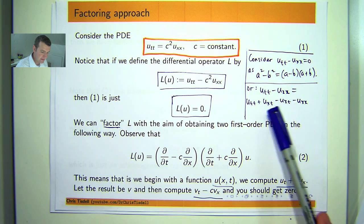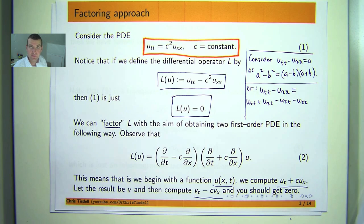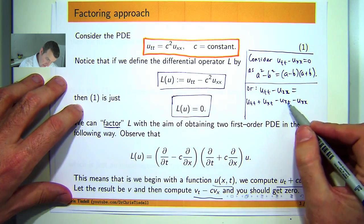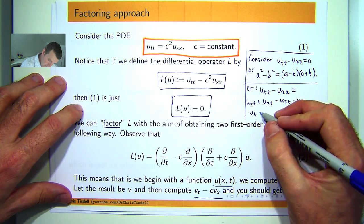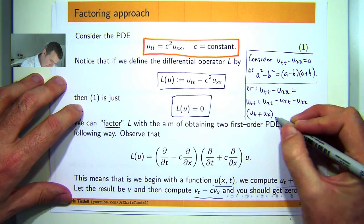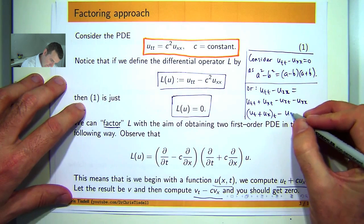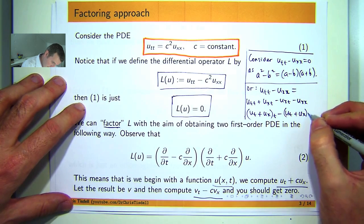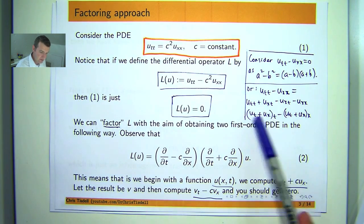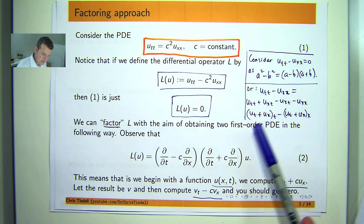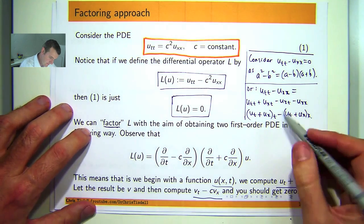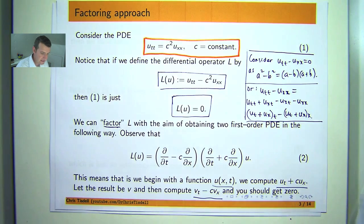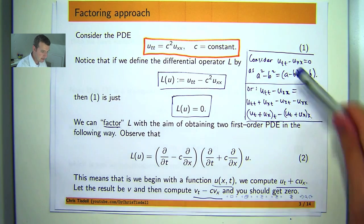Now in this course we are assuming that all the partial derivatives, the mixed partial derivatives commute. So I can actually rewrite this, if I switch those around, the xt to a tx, I can come out with the following. And if I let v be what's in here, then essentially I get vt minus vx. So you are breaking it down from a second order problem to two first order problems. So that's a couple of ways to factorize.